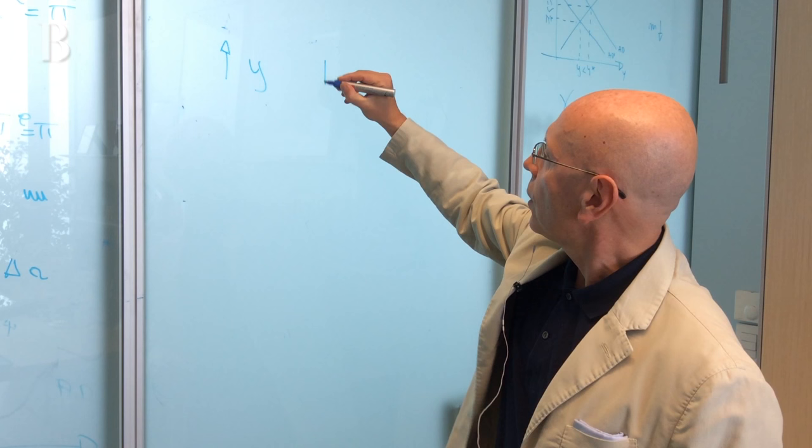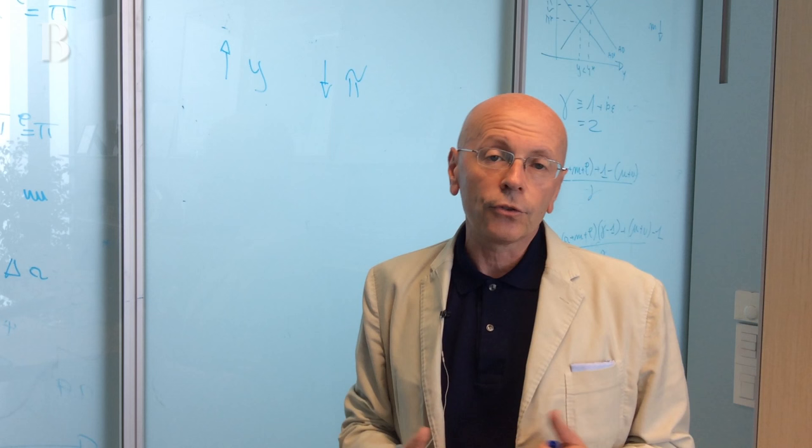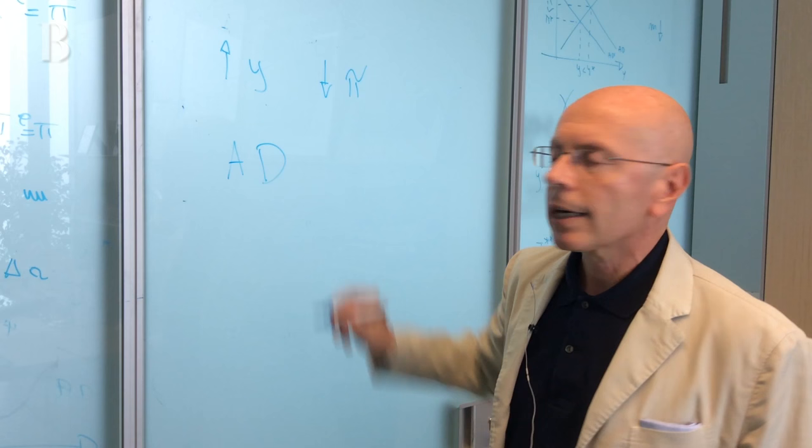What kind of policies can we design and implement? In general, there are two kinds of policies: on one side, aggregate demand policies; on the other side, aggregate supply policies.